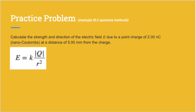Now that we know the equation, we're going to do a practice problem. The problem states: calculate the strength and direction of the electric field E due to a point charge of 2 nanocoulombs at a distance of 5 millimeters from the charge. My favorite trick when doing physics problems is to memorize all of the SI units for each variable, so that when I'm given those SI units in a problem, I know exactly what variable they plug into, so I can choose my equation. We know that Coulombs relates to charge and meters relates to distance, so we should use the electric field equation.